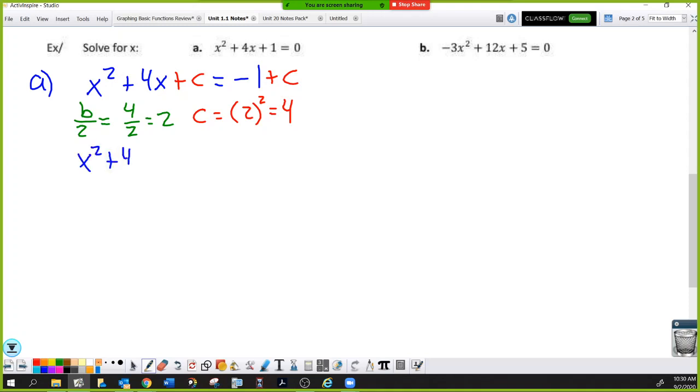So whatever you got here in green, you would square it to find your c value. So this c value is a 4. So x squared plus 4x, and I'll keep doing it in red for a moment, plus 4. I like to call it the magic c value in algebra 2. Magic c. And we add that 4 to the right side as well.